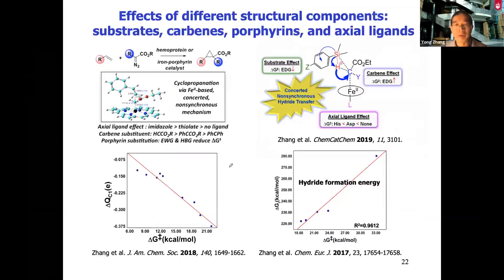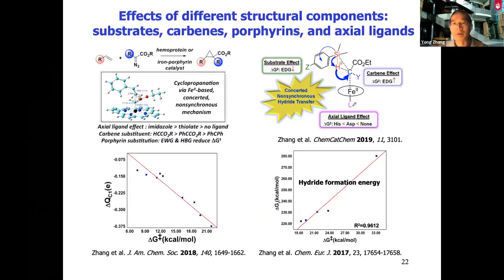Not only just the basic mechanism — once we establish the mechanism, we can also predict something for the future: what kind of additional substrates may be good for the reaction, what kind of carbenes can be used, what kind of substituents to add, or what kind of axial ligand to place, to improve the catalyst. This will be helpful in saving a lot of time otherwise spent on trial and error in experimental work.